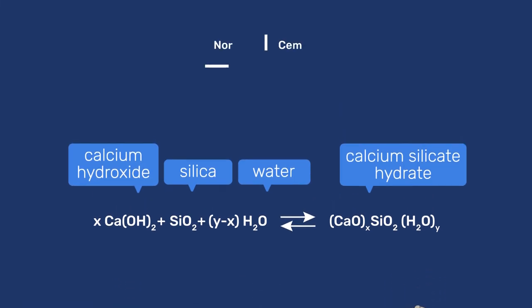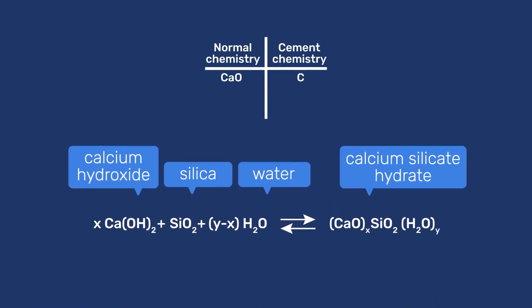In modern cement chemistry, we use C for CaO, H for H2O and S for SiO2. This means that calcium hydroxide would be noted as CH and that the above reaction would be written as xCH + S + (y-x)H gives CxSHy.